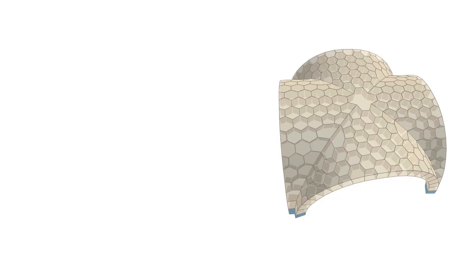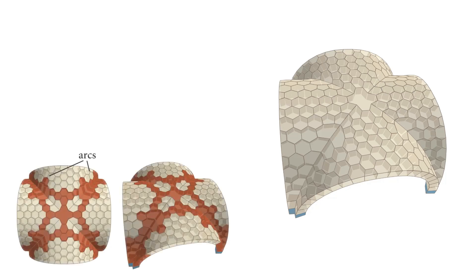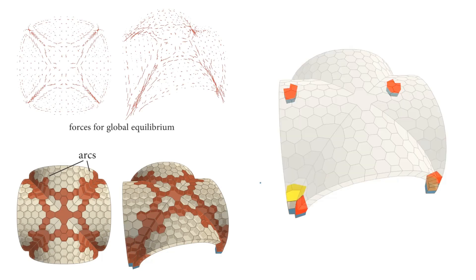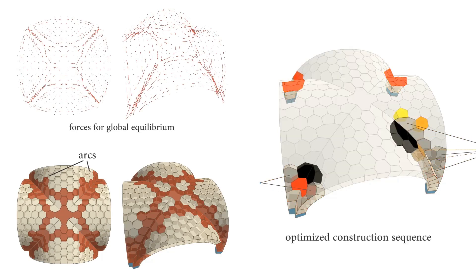Our algorithm decomposes the masonry structure into arcs and stable regions by analyzing its global equilibrium. We use this decomposition to generate an optimized construction sequence that starts from the arcs.